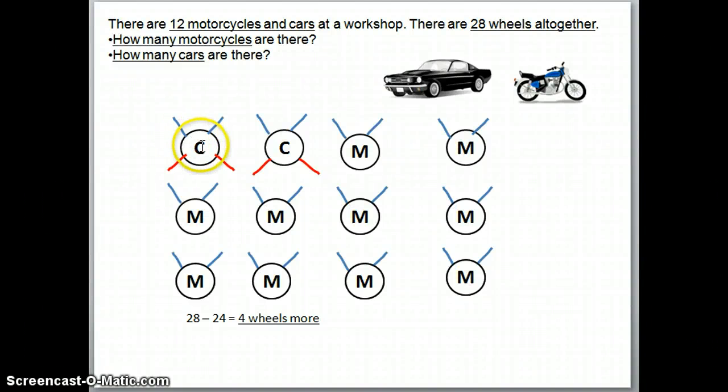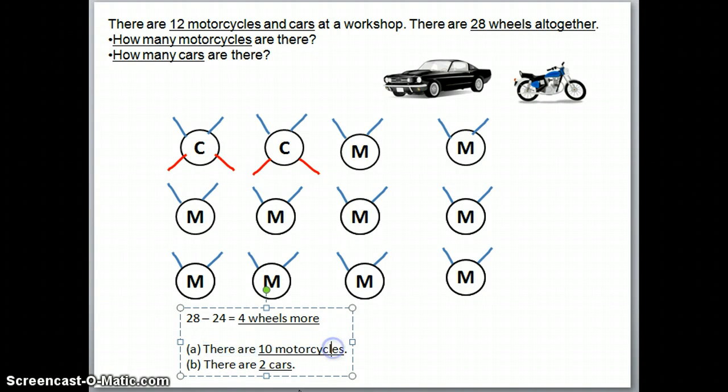So, C for cars. We have 1, 2 cars. We have 1, 2, 3, 4, 5, 6, 7, 8, 9, 10 motorcycles. Okay. Lastly, we write the word sentences. There are 10 motorcycles. There are 2 cars.